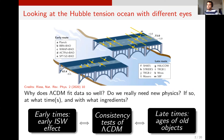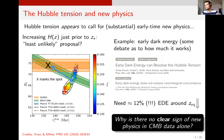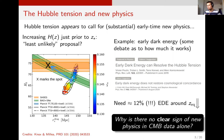At early times I'll focus on the early ISW effect, and at late times on the ages of very old astrophysical objects. It's always important to look at tensions and problems with different eyes. If we focus on the Hubble tension, just looking at H0 on its own sort of obscures the real story.